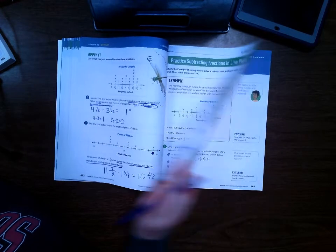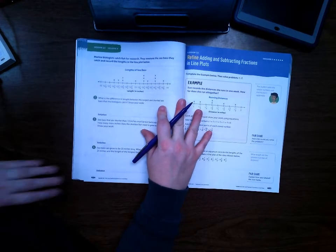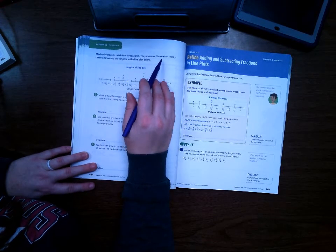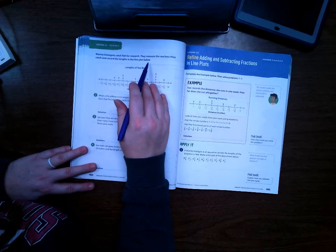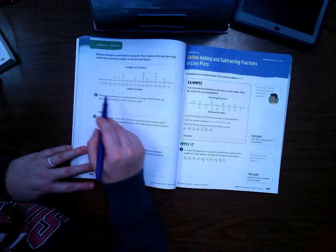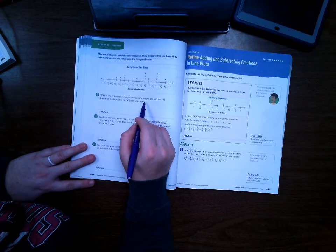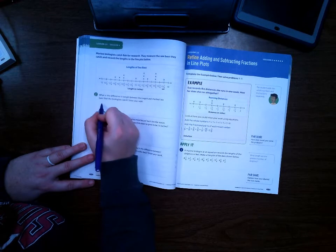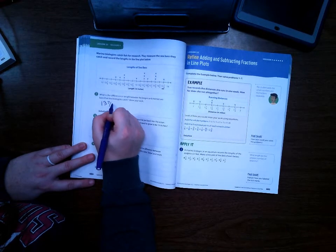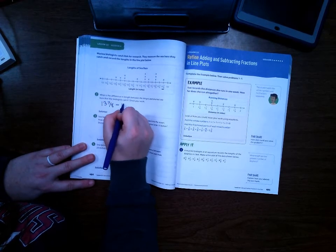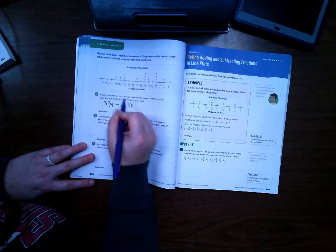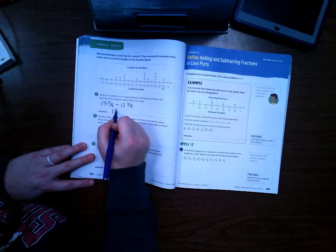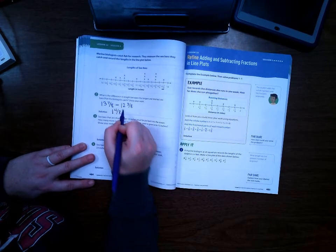Let's go to page 484. Marine biologists catch fish for research. They measure the sea bass they catch and record the lengths in the line plot below. What is the difference in length between the longest and shortest sea bass that biologists catch? Here's the longest because there's an x there, minus the shortest, which is 12 and 3/8. 13 minus 12 is 1. 7/8 minus 3/8 is 4/8. So it's 1 and 4/8 inches.